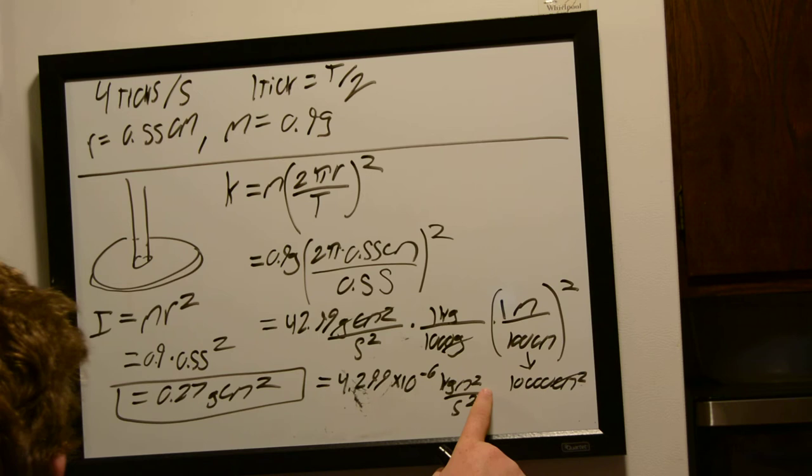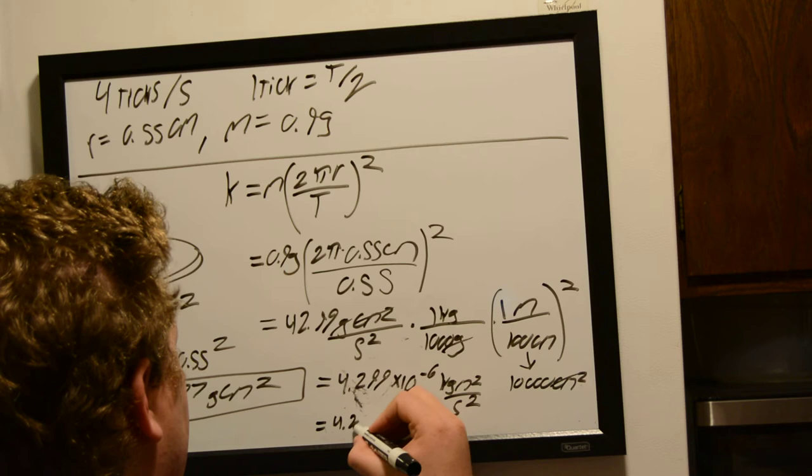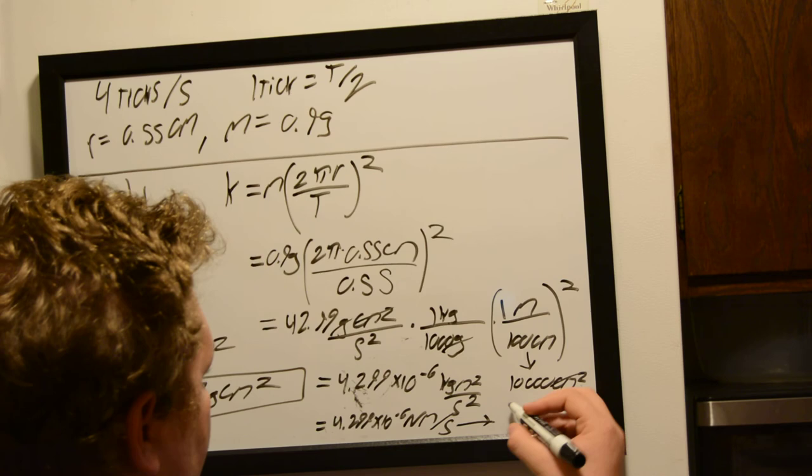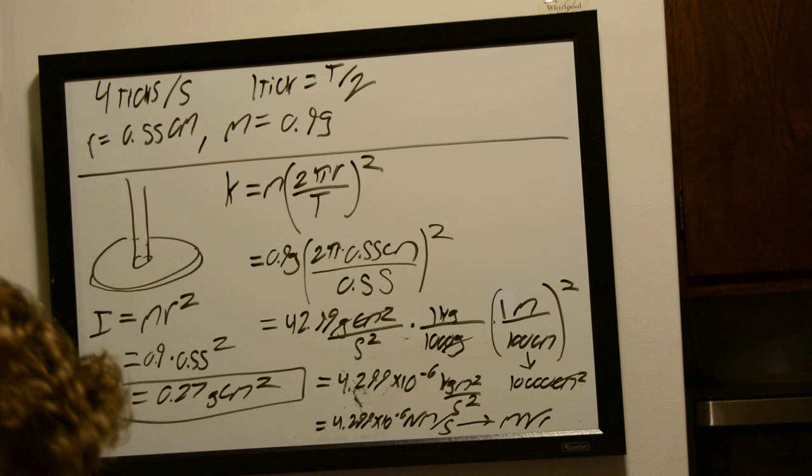And again, we know that our newtons is 1 kilogram meter per second. So, this is going to come out to be 4.299 times 10 to the negative 6 newton meters per second. And we can just write that second as per radian. So, newton meter per radian. And that is the answer.